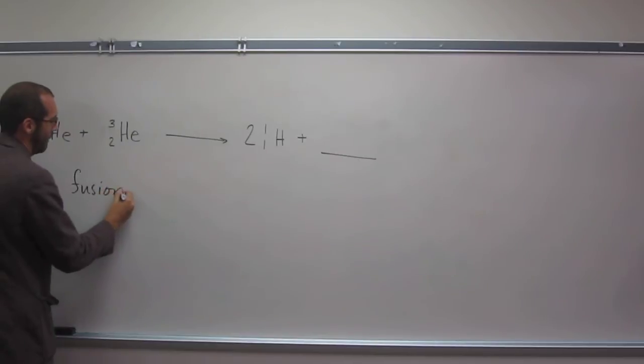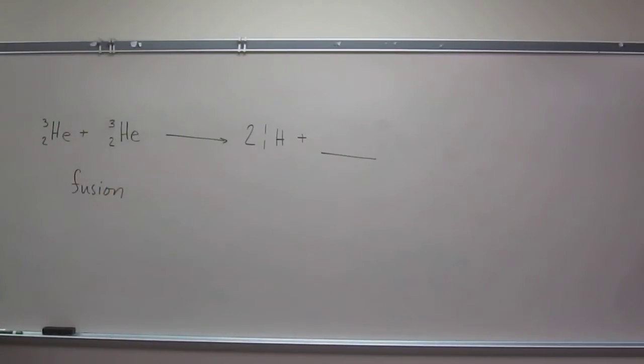So this is like what happens in the sun. So again, it's the same thing. So we're adding up everything here. So we've got a mass number, total mass of six, total proton number of four.